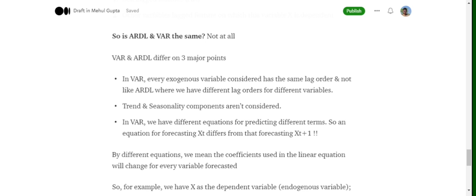So if we have a dataset with variables X, Y, Z where X is the dependent variable and Y and Z are exogenous (independent variables), it's not necessary that Y and Z should have the same lag order. For example, we might consider a lag of order 2 for Y but lag of order 1 for Z.